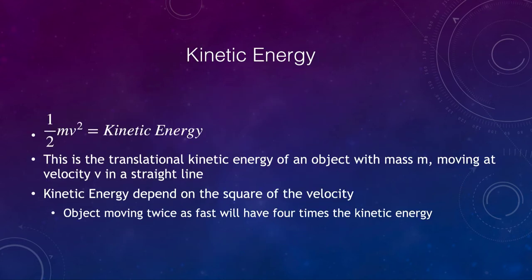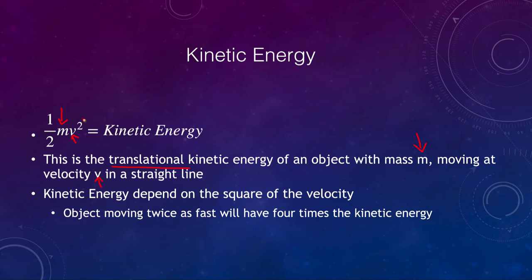Kinetic energy is given by one half mv squared, where m is the mass and v is the velocity of the object. This is called the translational kinetic energy. Any object with mass moving at a velocity will have some kinetic energy. If the object has no mass, or is not moving, it has no kinetic energy. Note that kinetic energy depends on the square of the velocity — an object moving twice as fast has four times the kinetic energy.